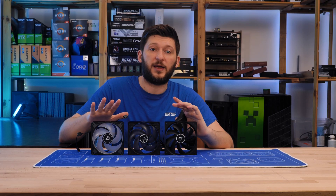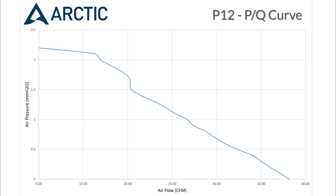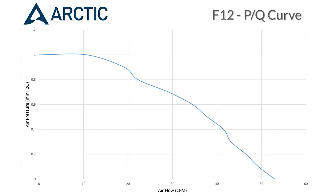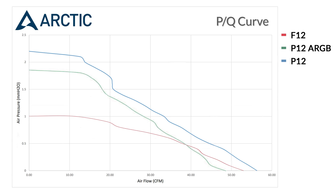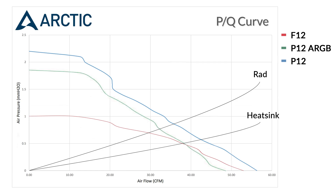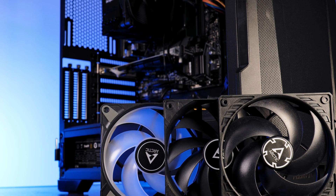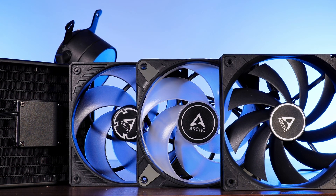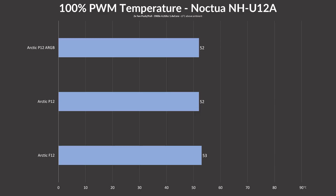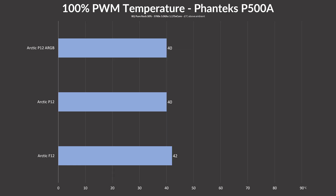Arctic also provides PQ curves, though somebody there seems sadistic because the graphs are on different scales. After tinkering, we can make them fit. The P12 is absolutely always the best fan on the PQ curve. We strapped two of them in front of a P500A and one in the back as a case fan, then strapped them on top of an NZXT Kraken X22 as a radiator fan. In each and every one of those cases, the P12 was either the coolest fan or sharing the first spot with one of the others.